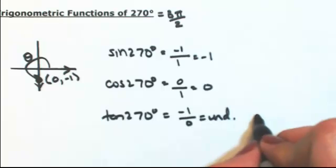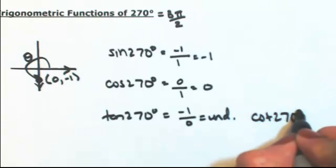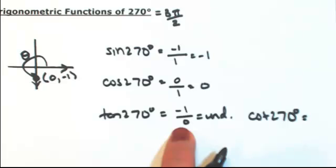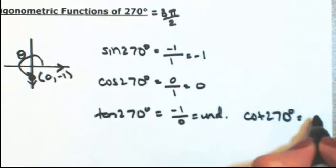So now taking the reciprocals, I have the cotangent of 270 degrees. The reciprocal of negative 1 over 0 becomes 0 over negative 1, so that's just 0.